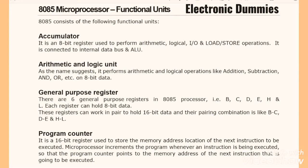General purpose registers: there are six general purpose registers in the 8085 processor — B, C, D, E, H, and L. Each register can hold 8-bit data. These registers can work in pairs to hold 16-bit data, and their pairing combinations are BC, DE, and HL.